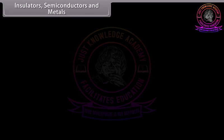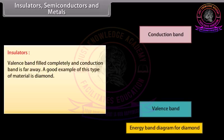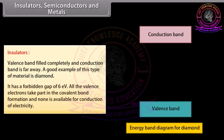Insulators, semiconductors, and metals. On the basis of band theory of solids, the solids are classified as insulators, semiconductors, and metals. Insulators have a completely filled valence band and the conduction band is far away. A good example is diamond, which has a forbidden gap of 6 electron volts. All the valence electrons take part in covalent bond formation and none is available for conduction of electricity.